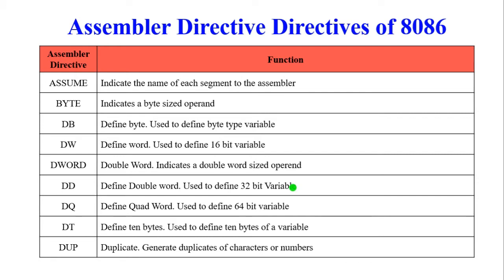The assembler directives used in 8086 programming include: ASSUME — indicates the name of each segment to the assembler; BYTE — indicates byte size operand; DB — define byte, used to define an 8-bit variable; DW — define word, used to define a 16-bit variable; DWORD — indicates a double word size operand; DD — define doubleword, used to define a 32-bit variable; DQ — define quadword, used to define a 64-bit variable; DT — define ten bytes, used to define a 10-byte variable; DUP — duplicate, generates duplicates of a character or number.